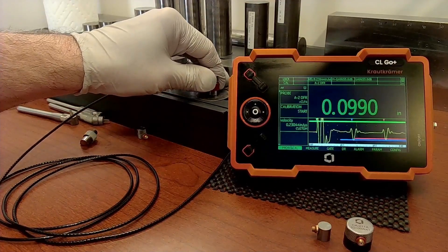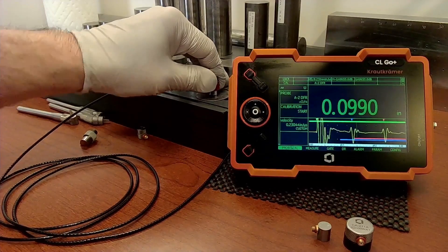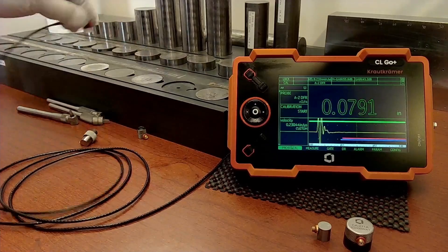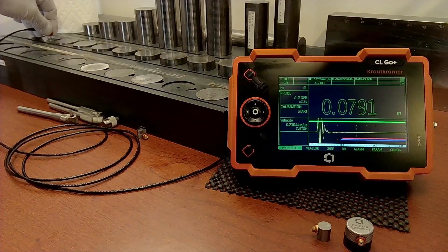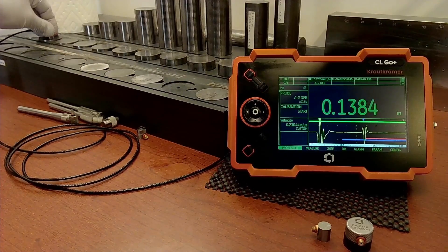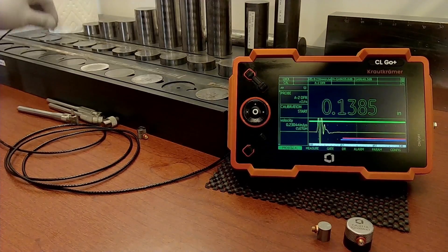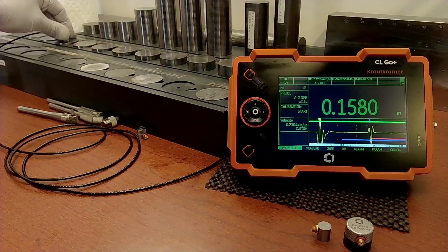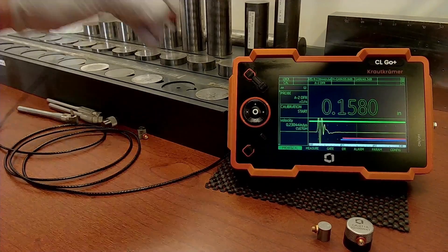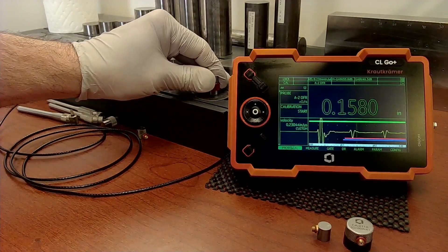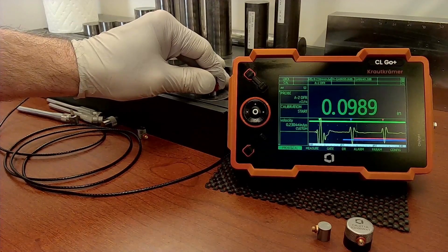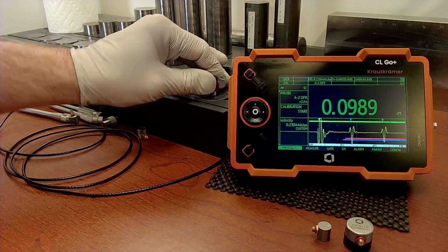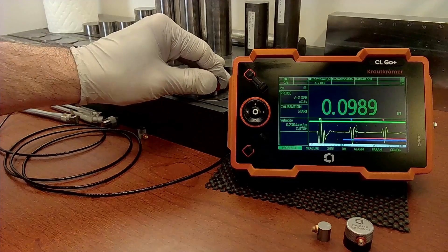And just that quickly we are calibrated. Go back to my 99 thousandths block and there we are. And now I can look at some different blocks. There's 79 thou. Go to a little bit thicker block. 138. So there's 158. So the instrument locks in on a reading very quickly and is very repeatable.